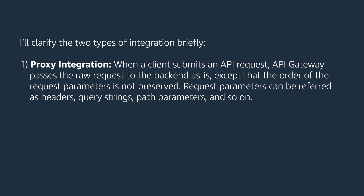First, proxy integration. When a client submits an API request, API Gateway passes the raw request to the backend as is, except that the order of the request parameters is not preserved. Request parameters can be referred to as headers, query strings, path parameters, and so on.